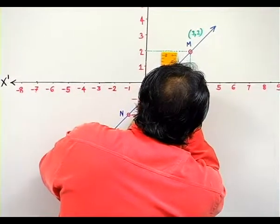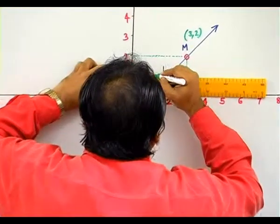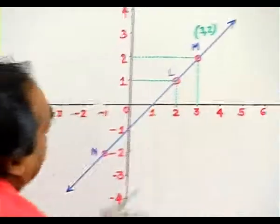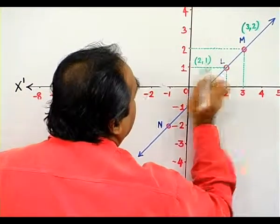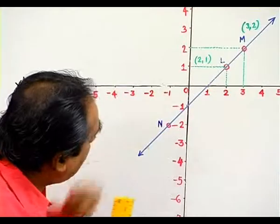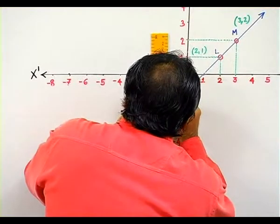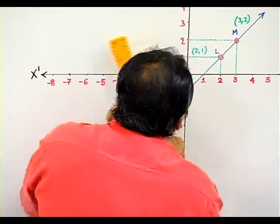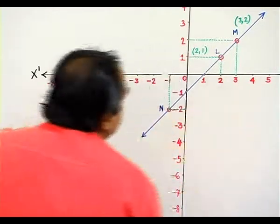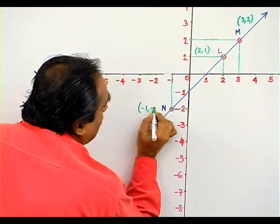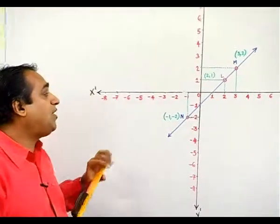Now for point L, again drop a perpendicular first on the x-axis and then drop a perpendicular on the y-axis. Let us write the coordinates: 2 comma 1. Then we go to the third point N, drop a perpendicular on the x-axis, drop a perpendicular on the y-axis, and we see that the coordinates are minus 1 comma minus 2.